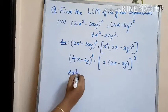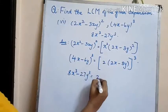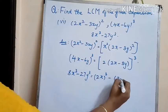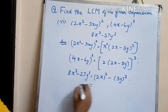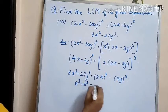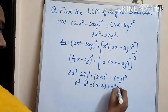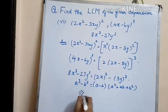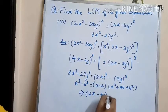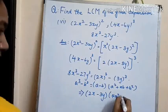The last polynomial is 8x cubed minus 27y cubed, which can be written as 2x whole cube minus 3y whole cube. This is of the form a cubed minus b cubed. The formula is a minus b into a squared plus ab plus b squared. Applying it, we get 2x minus 3y into 4x squared plus 6xy plus 9y squared.